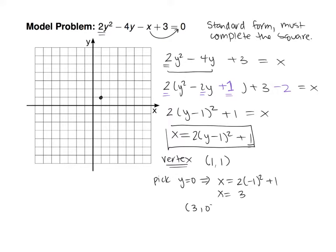The vertex is the most important point. The x-coordinate is 1 (given by the constant) and the y-coordinate is also 1, so the vertex is (1, 1). To get one more point, plug in y = 0: we get x = 2(−1)² + 1 = 3. So the point (3, 0) is on this parabola. Given that the coefficient 2 is positive, the parabola opens in the positive x direction.